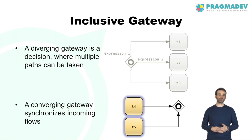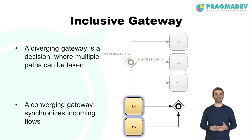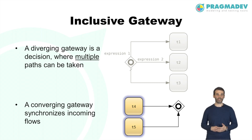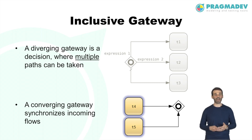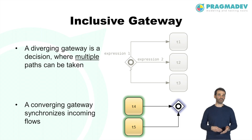A converging inclusive gateway merges a combination of alternative and parallel paths. A flow arriving may be synchronized with other flows arriving later. In the example, if the flow from T4 arrives, the gateway may or may not trigger — it triggers only if no other flow in the process can arrive via T5. In the case where both T4 and T5 flows are possible, the gateway waits for both before triggering.